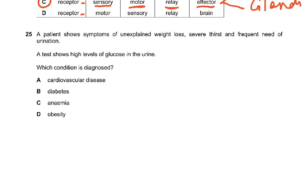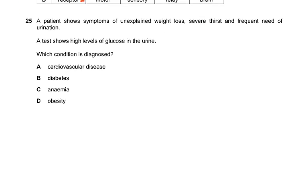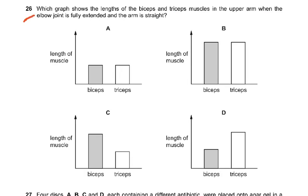Question 25: A patient shows symptoms of unexplained weight loss, severe thirst and frequent need of urination. A test shows high levels of glucose in the urine. The diagnosis? Diabetes.